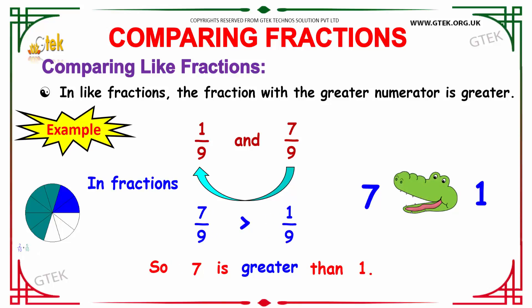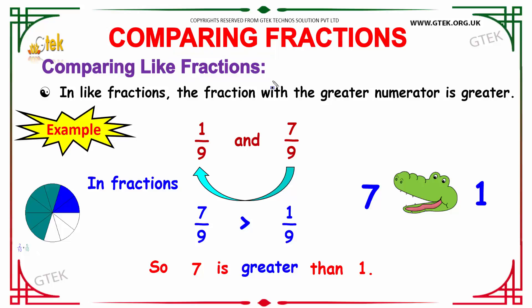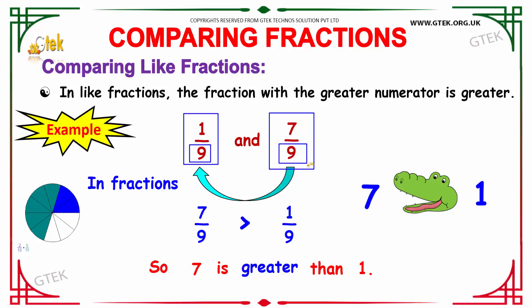The first thing we are going to discuss is comparison in terms of like fractions. Before we get into the examples, we need to understand the logic and definition of like fractions. In terms of like fractions, the fraction with a greater numerator is considered to be the greatest one. We have an example: 1/9 as the first term and 7/9 as the second term. Since both terms have the same denominator, this is considered to be like fractions.